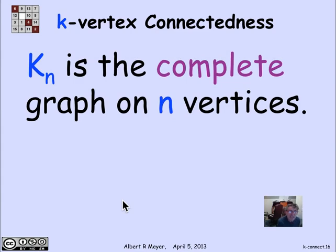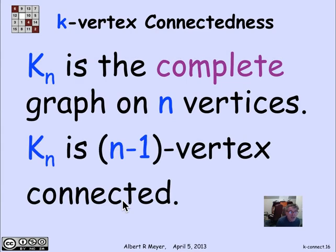The complete graph on n vertices, to cut it up, requires cutting n minus 1 edges, and in fact n minus 1 vertices to break it up, because everything is connected to everything else. So Kn is as connected a graph on n vertices as you can possibly have. But of course, it's got a lot of edges. It's got n choose 2 edges, or about n times n minus 1 over 2 edges.